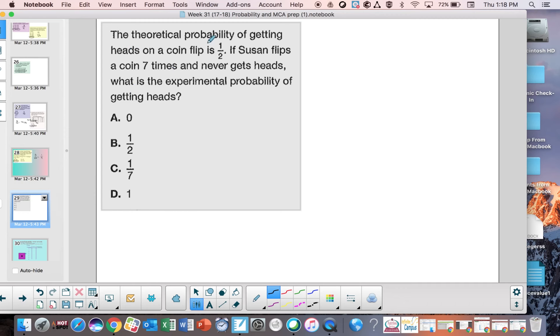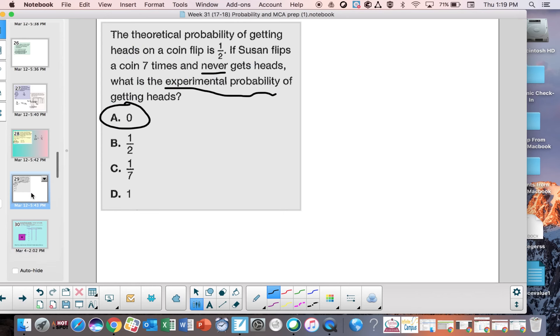The theoretical probability of getting heads on a coin flip is one half. If Susan flips a coin seven times and never gets heads, never, key word, what is the experimental probability of getting heads? Well, she never got heads. So for the experimental probability, it's zero. She didn't get any. Zero, zero, zero.